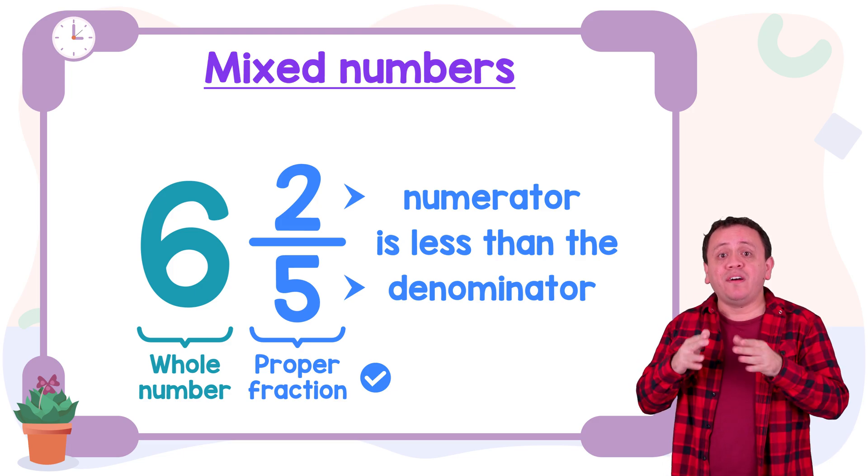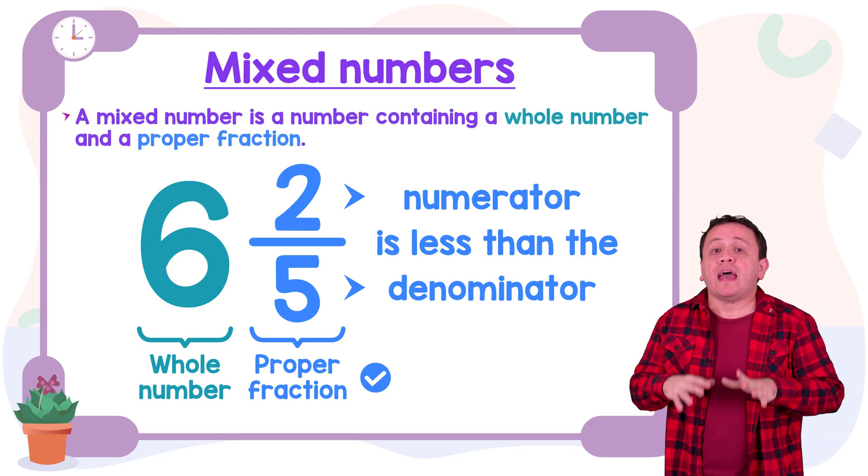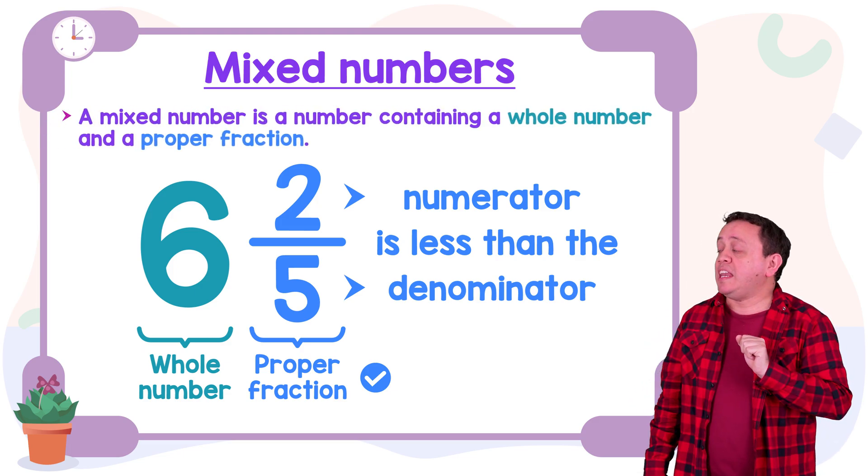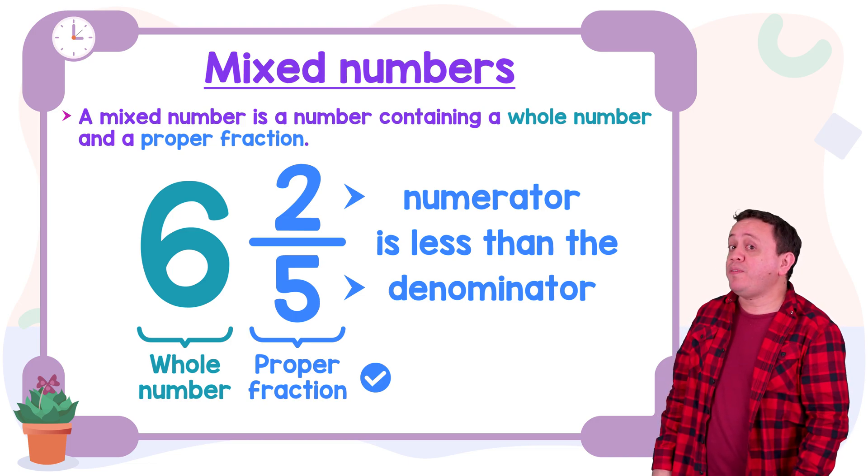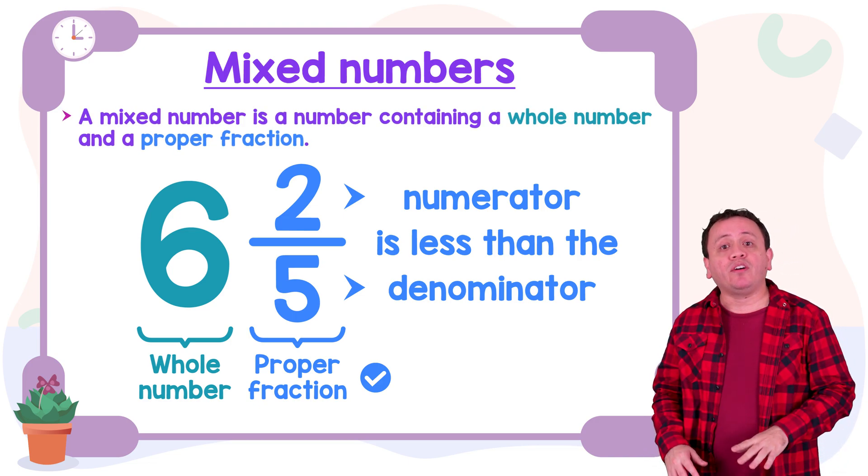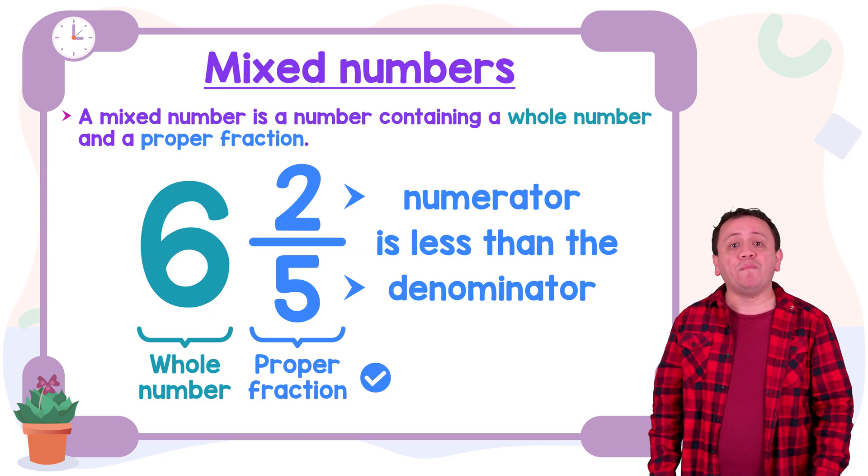And now we're ready to see the definition of a mixed number. Pay attention! A mixed number is a number containing a whole number and a proper fraction. Once again, a mixed number is a number containing a whole number and a proper fraction.